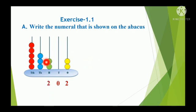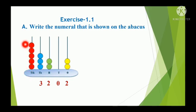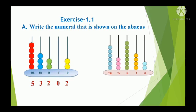In the 1,000s place, there are 3 beads. In the 10,000s place, there are 5 beads, so it is 5. Now the number is 53,202. Let us see one more example.